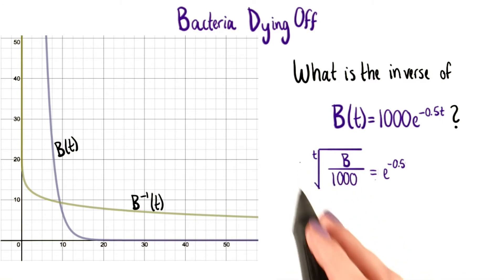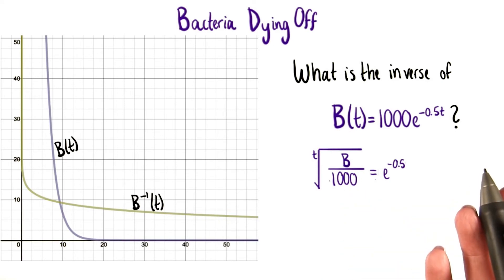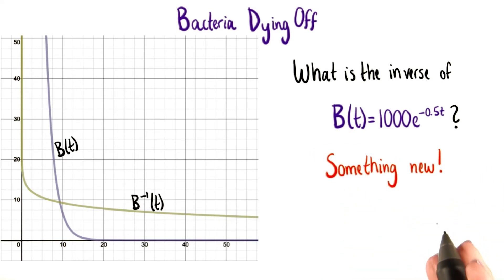but we would still have an exponent of t over here, since the t-root is the same as taking this to the 1/t power. So that's not going to help us. We actually need a totally new idea to solve this problem.